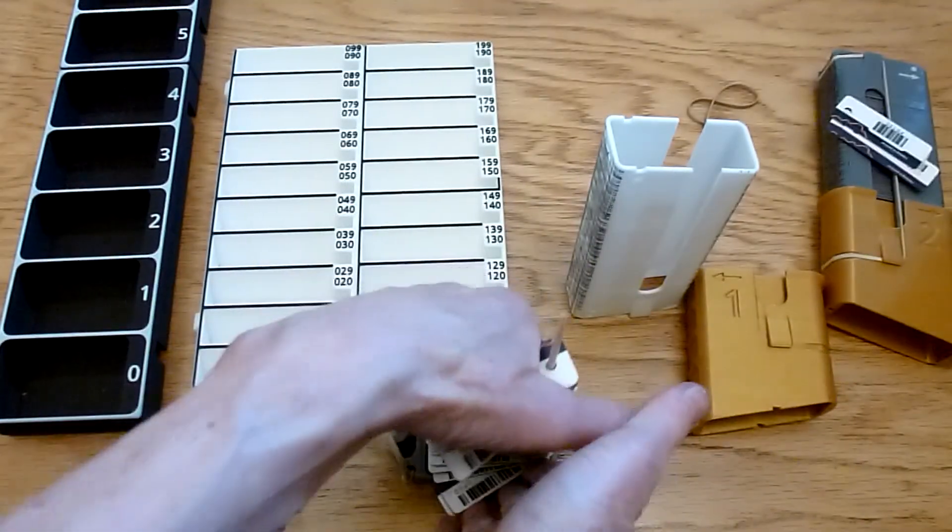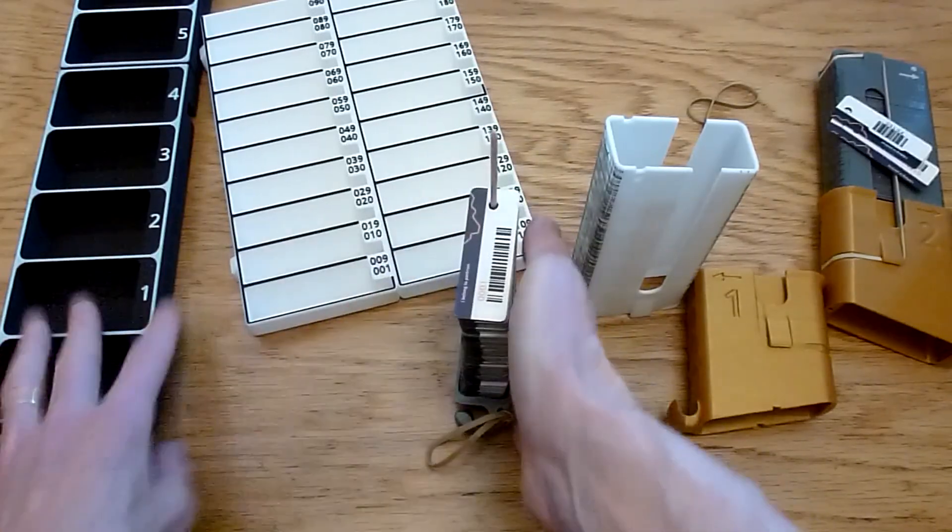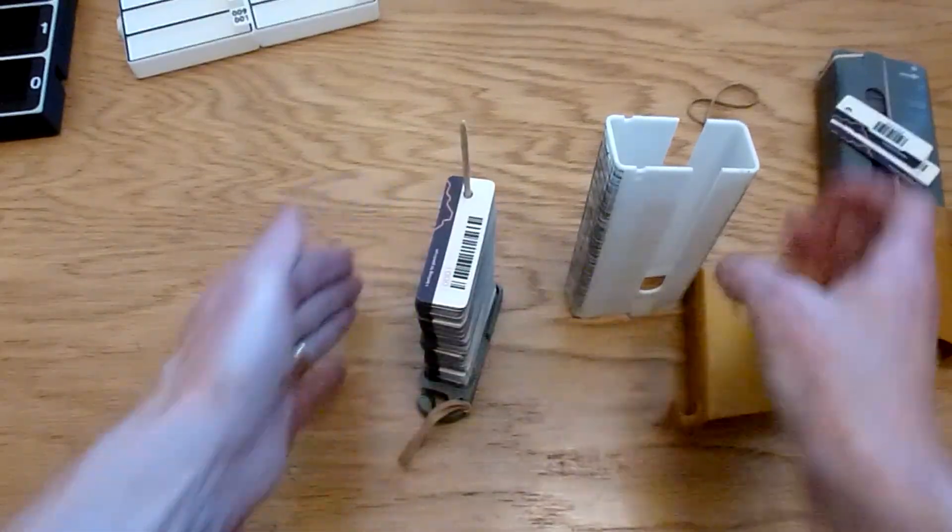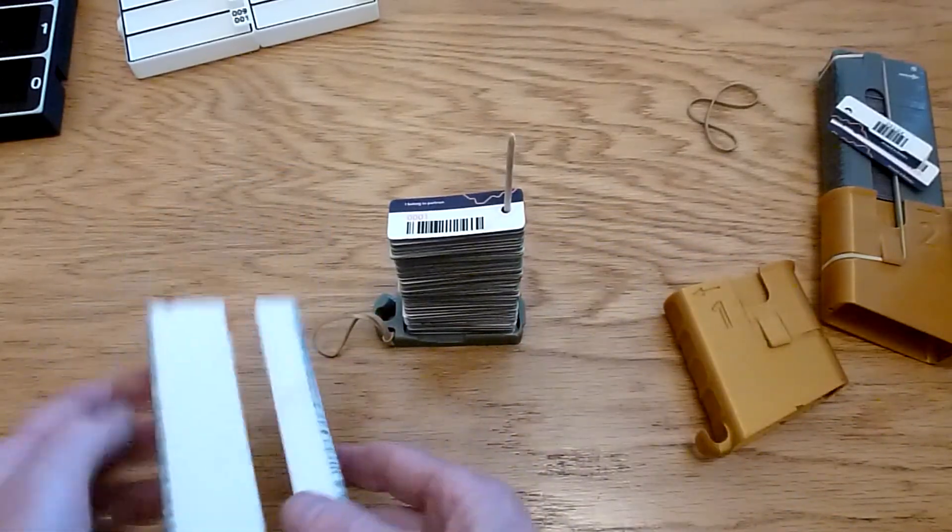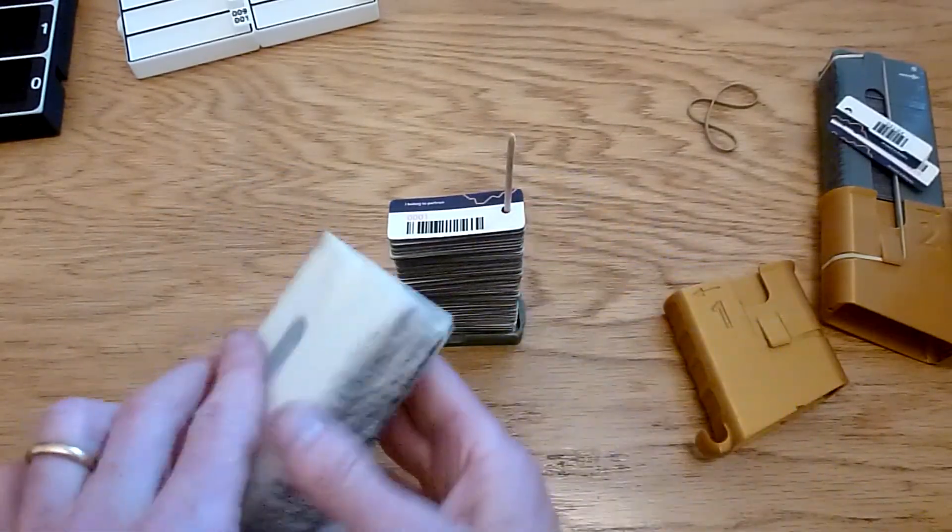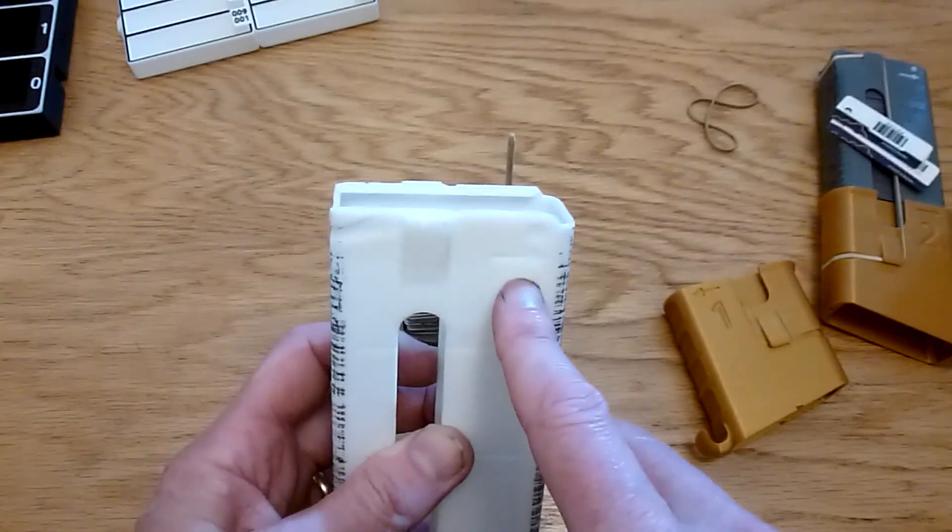Like that. Then you line them all up. Line them all up. And at this point, it's really important that you align the holes with the side that has a little hole and an arrow.